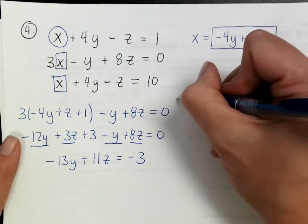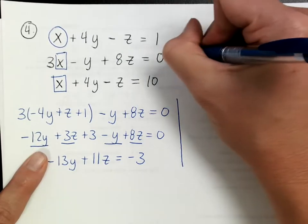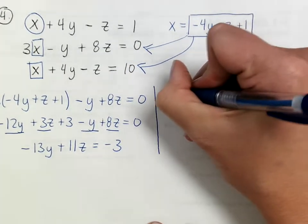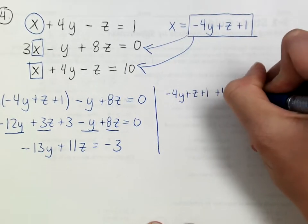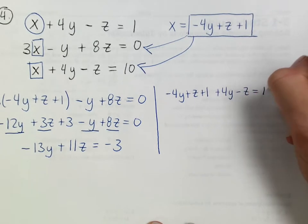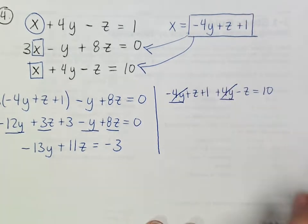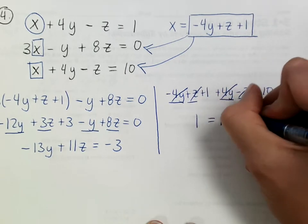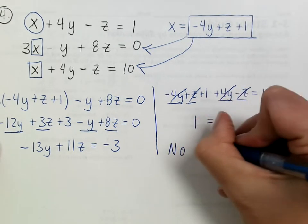Substituting x into the second equation: (negative 4y + z + 1) + 4y minus z = 10. Negative 4y and 4y cancel; z and negative z also cancel, leaving 1 = 10. Since 1 is never equal to 10, this system has no solution.